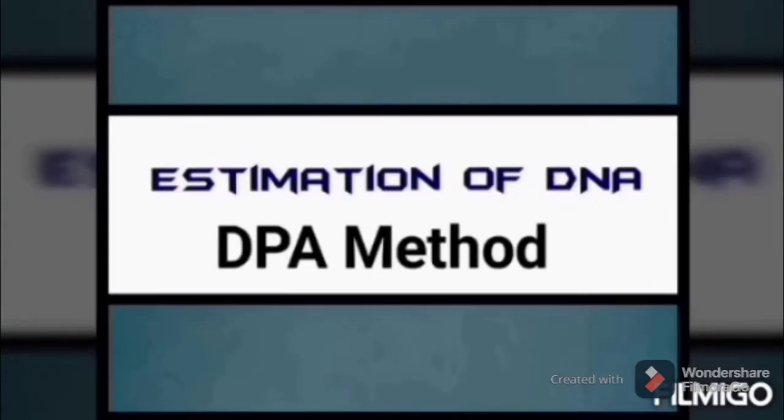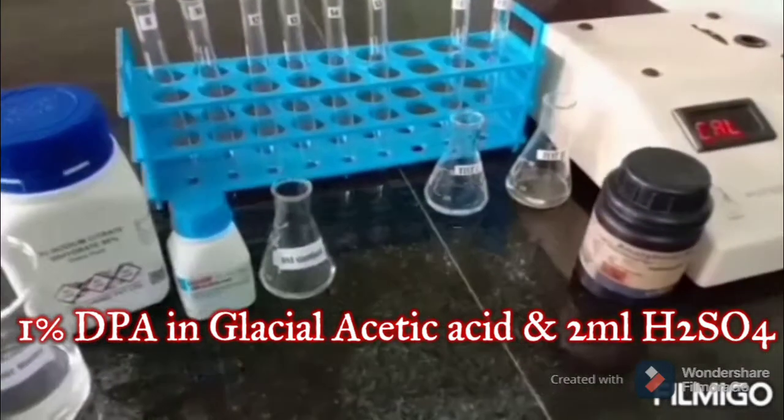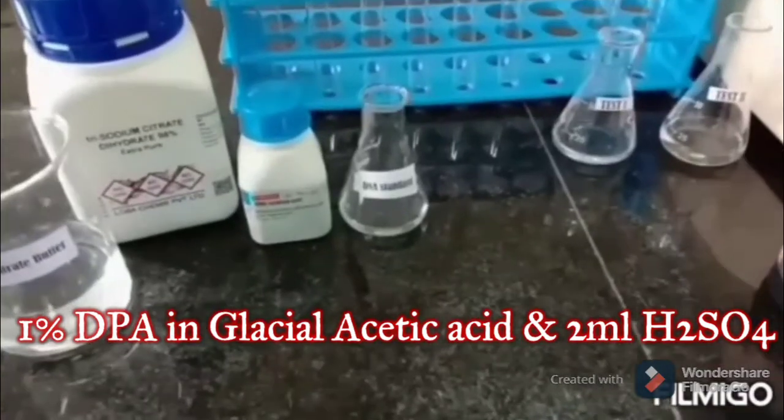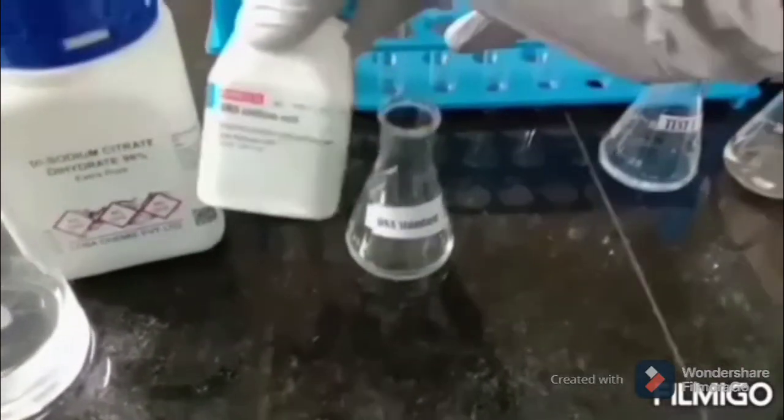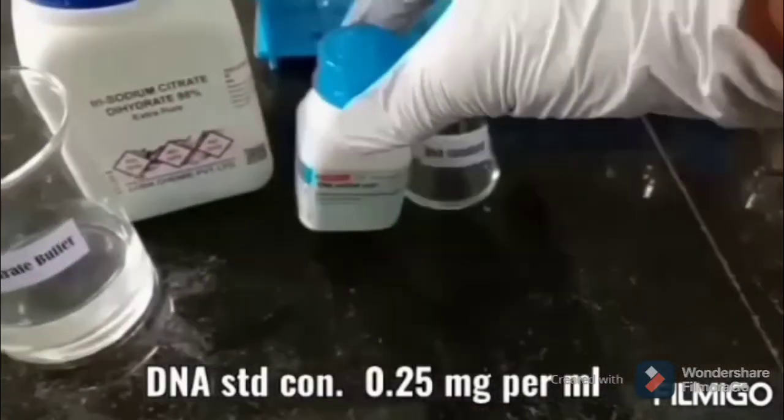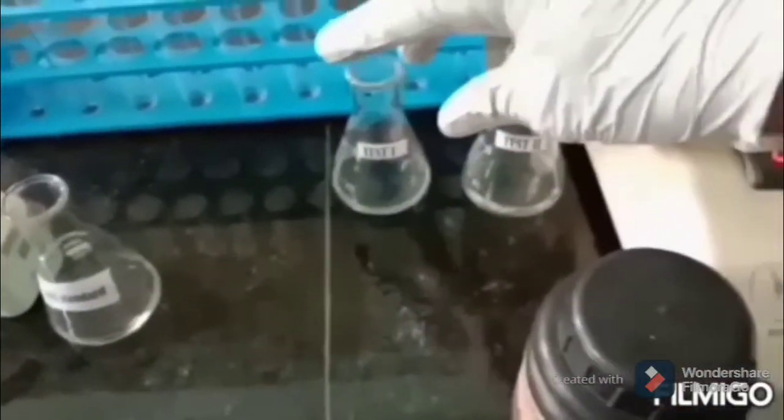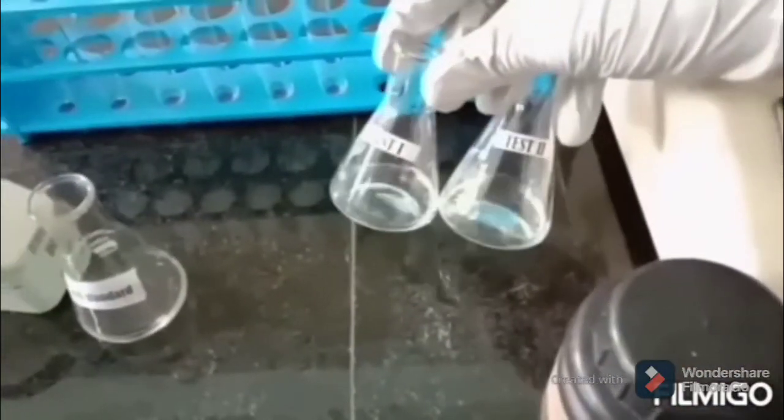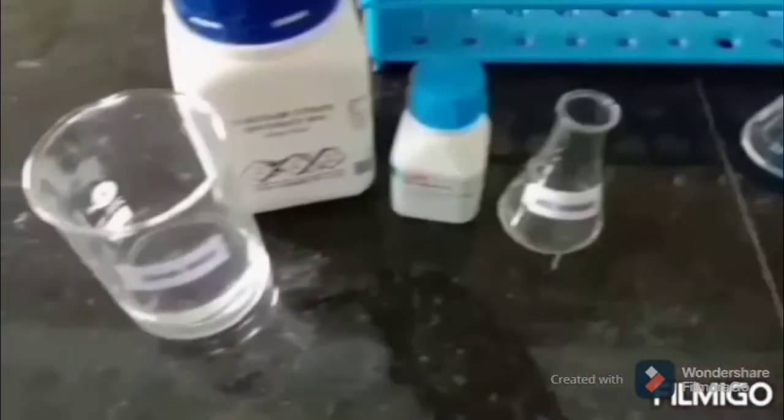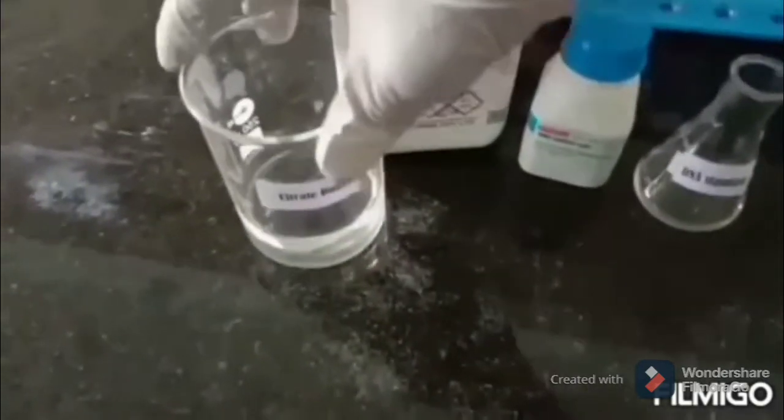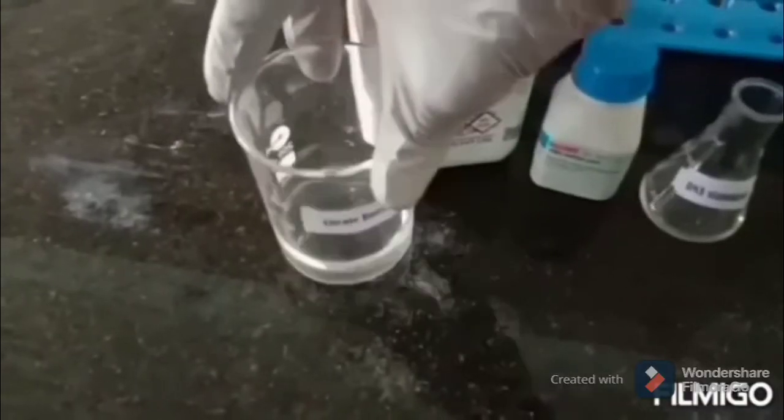Quantitative estimation of DNA by diphenylamine method. The reagents required are: diphenylamine reagent, a standard DNA solution having concentration of 0.25 milligram per ml, which is used to make serial dilution of standards; unknown concentrations of DNA, the test solutions, the concentration of which are to be found out; then saline citrate buffer, which is prepared using sodium chloride and sodium citrate dissolved in distilled water and pH adjusted to 7.